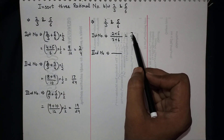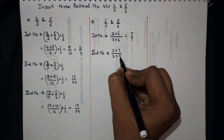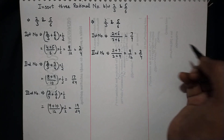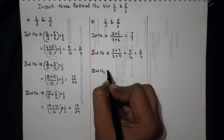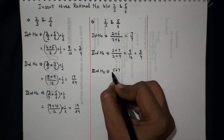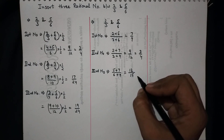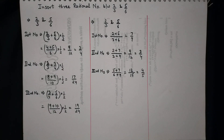For the second number, we add 2 and 7, and 3 and 9, giving 9/12, which simplifies to 3/4. For the third number, we add 5 and 7 upon 6 and 9, giving 12/15, which simplifies to 4/5. This was the second method to get numbers between the two given rational numbers.